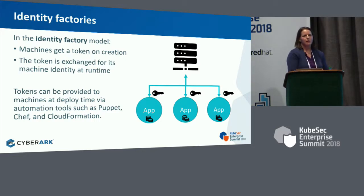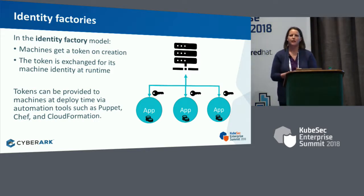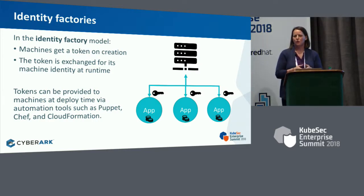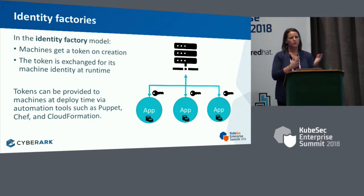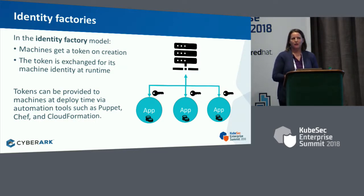The first model is something we call an identity factory. If I am an application that wants to connect to a service and I need an identity that service recognizes, one way to do that is to automatically deploy the application with a token that it can give to the service in order to be granted an identity. This is a pretty simple model that we've used for a long time, but it does suffer from the secret zero problem — the token must be supplied to the machine at startup, which you can do with automation tools but it's still something you have to deal with.